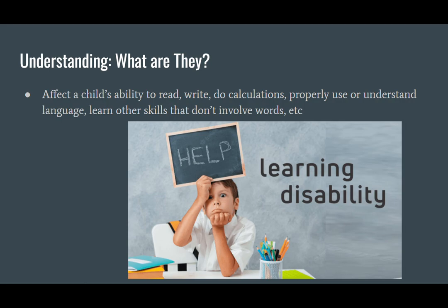So what is it? The brain is not working properly to use neural pathways to process information and perform certain cognitive tasks. A majority of kids with learning disorders may have average or above average intelligence. Some common learning disorders affect children's ability to read, socialize, write, do calculations, properly use or understand language, and learn other skills that don't involve words.